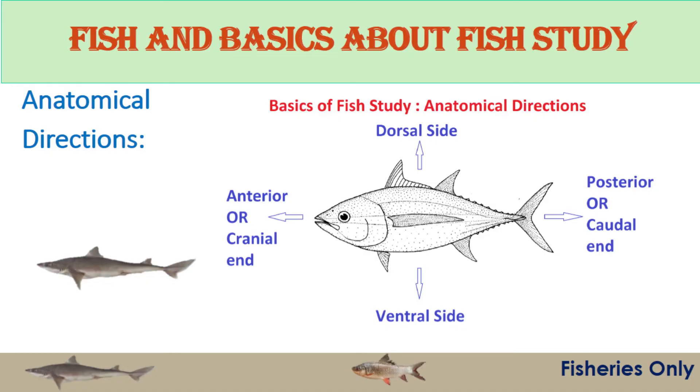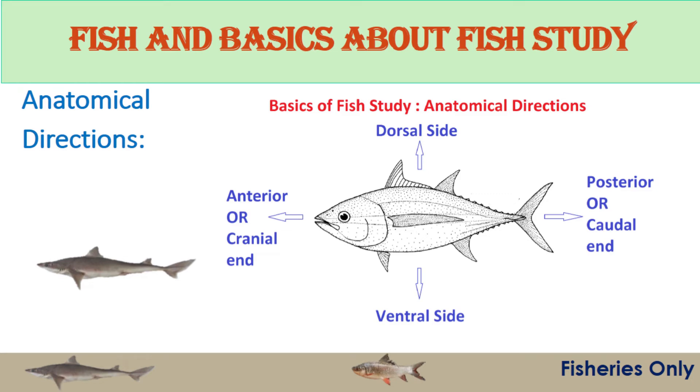Now studying the basics, we have to discuss anatomical directions. The anterior part is the front region including the head of the body, and it is opposite to the posterior side. The posterior end includes the tail region with the caudal peduncle and caudal fins. The upper side of the fish body is called the dorsal side, consisting of the back and dorsal fins. The ventral side is opposite to the dorsal side, consisting of the belly and abdomen of the fishes.